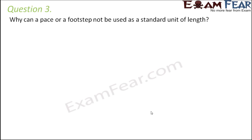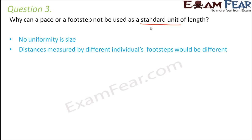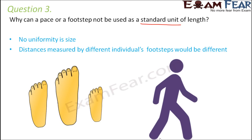Question number three: why can a pace or a footstep not be used as a standard unit of length? Anything used as a standard unit must be uniform in size — the same everywhere for everyone. But a footstep differs from person to person; one person's step may be bigger than another's. So distances measured by different people's footsteps would vary, and the size of the foot also varies — therefore they cannot be used as a standard unit of length.